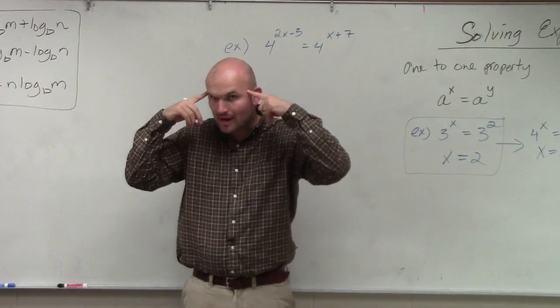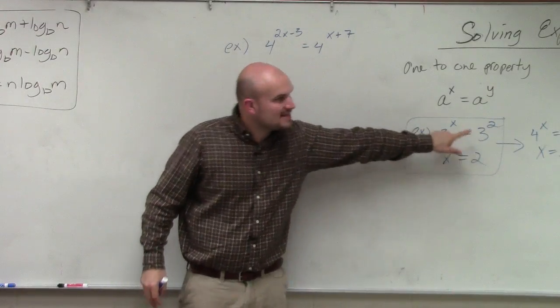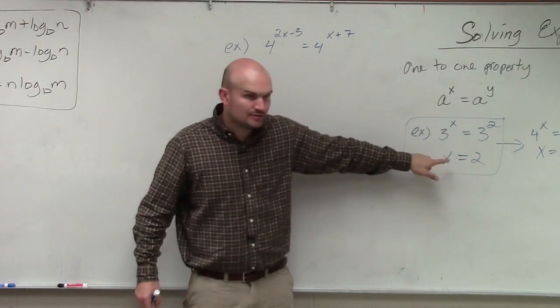What the one-to-one property says, or states, is that if you have two exponents with the same base, then the powers are equal to each other.